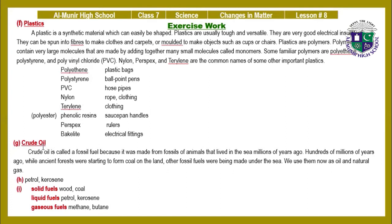Crude oil: crude oil is called a fossil fuel because it was made from fossils of animals that lived in the sea millions of years ago. Hundreds of millions of years ago, while ancient forests were starting to form coal on the land, other fossil fuels were being made under the sea. We use them now as oil and natural gas. Part F answers: petrol and kerosene. Part I — solid fuels: wood, coal; liquid fuels: petrol, kerosene; gaseous fuels: methane.